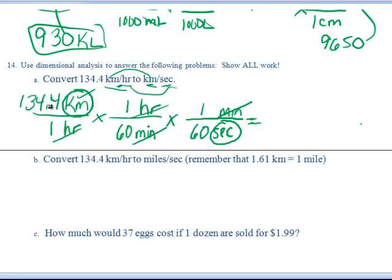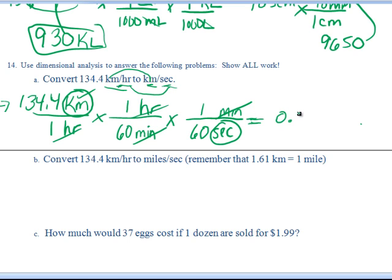Then I do 134.4 divided by 1, times 1, divided by 60, times 1, divided by 60, and hit equals. Your calculator is going to spit out a big number. You're going to keep 4 sig figs because what you start with is 4 sig figs. So it's 0.0 — now we start counting — 4 sig figs: 3, 7, 3, 3. That's how many kilometers per second we can travel.